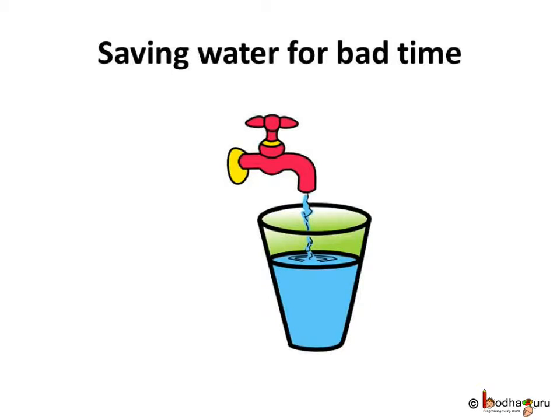Even after using water judiciously, still a lot of water is required as the population is increasing day by day. The rain water supplies water to all the water sources. Just like your parents save money for bad times, we have to save or conserve the rain water for bad times.